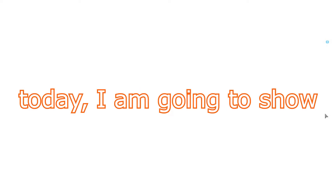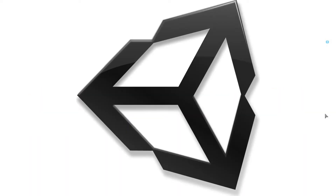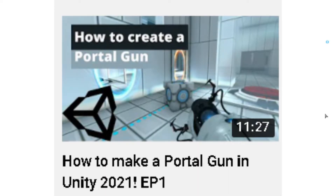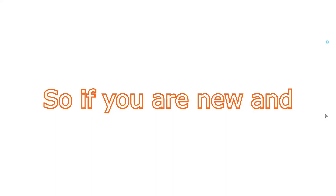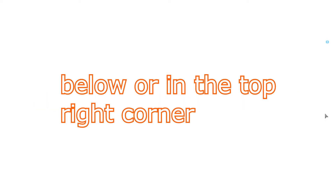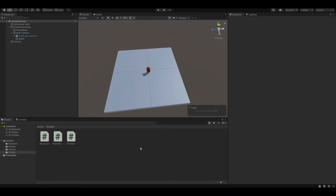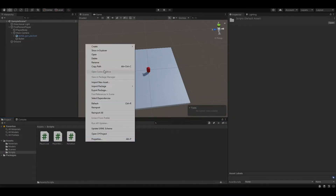Hello guys, today I'm going to show you how to shoot a portal gun bullet using the Unity game engine. This is part 2 of 'How to Create a Portal Gun using Unity', so if you're new and don't know where to start, please check out part 1 in the description below or in the top right corner. Now let's get right into it — firstly let's create a script called Bullets.